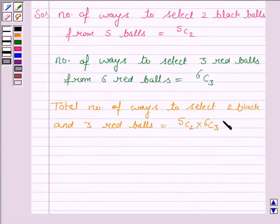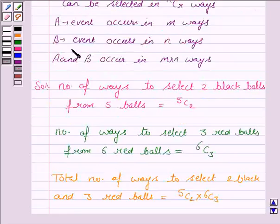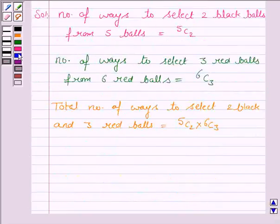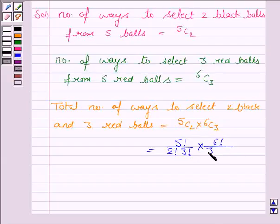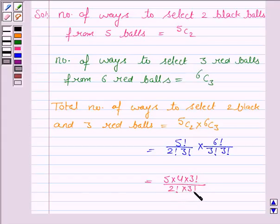This is using the fundamental principle of counting discussed in the key idea. And it is equal to 5 factorial upon 2 factorial into 3 factorial times 6 factorial upon 3 factorial into 3 factorial. So, 5 factorial can be written as 5 into 4 into 3 factorial upon 2 factorial into 3 factorial.